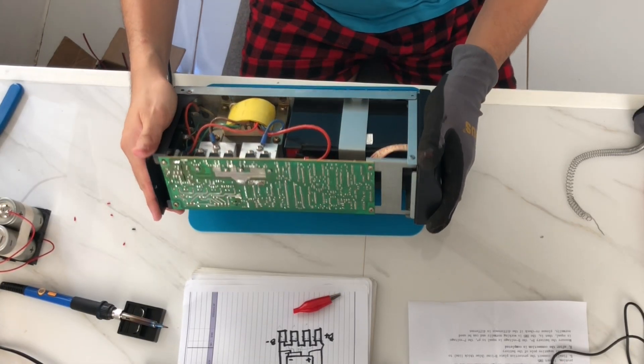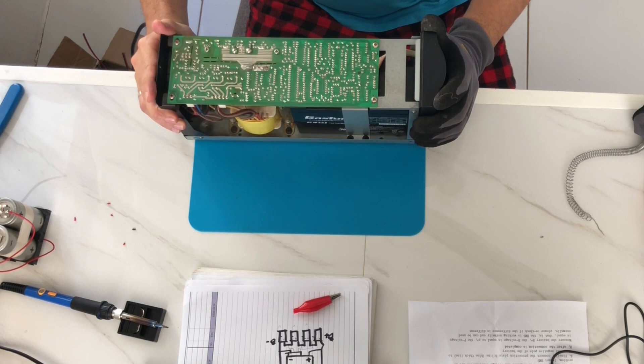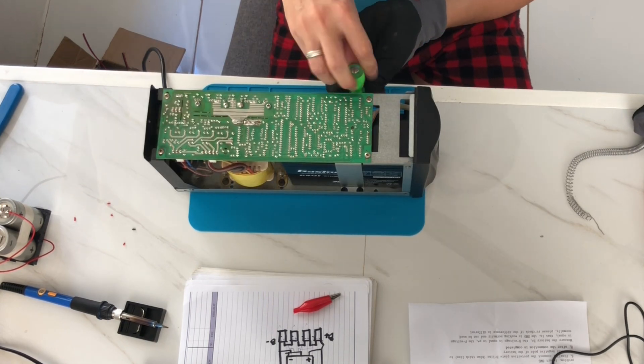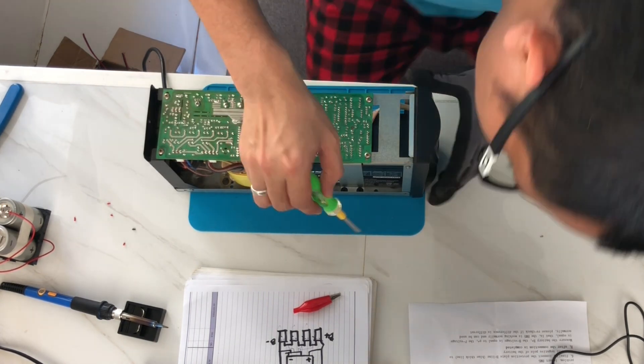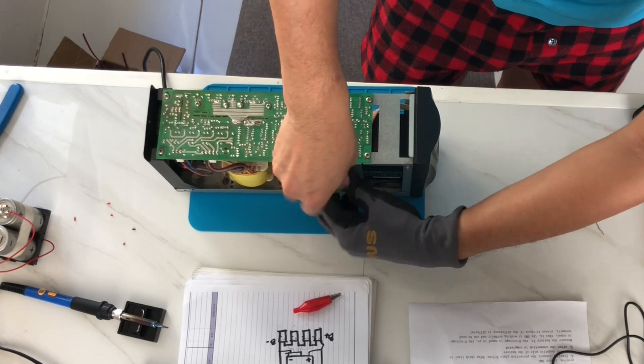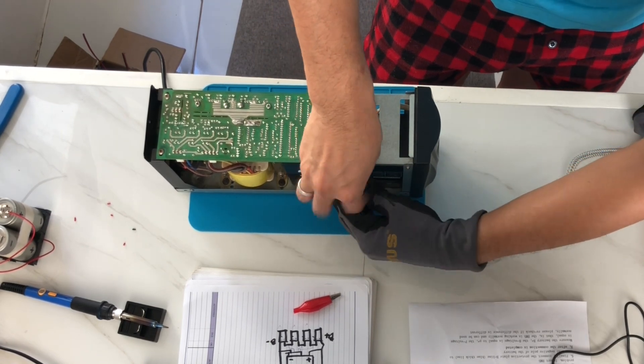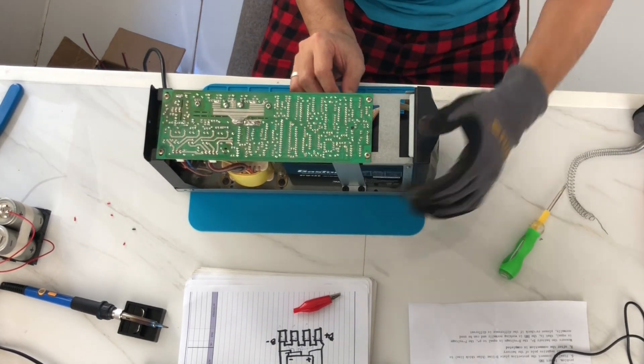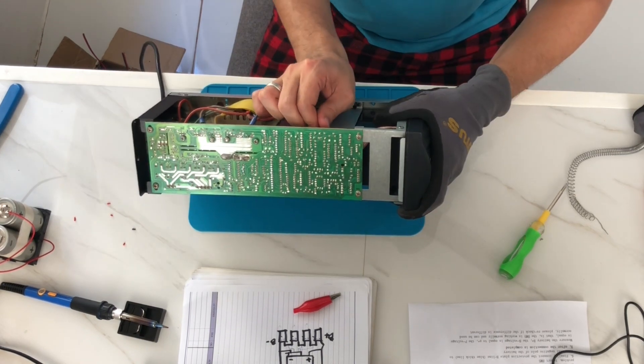So since this is the first time I am doing this experiment, we'll first start with the lower capacity UPS. This one has 12 volt battery which is the old lead acid battery which I think has been replaced multiple times already.